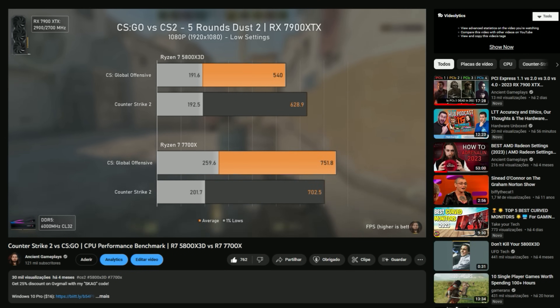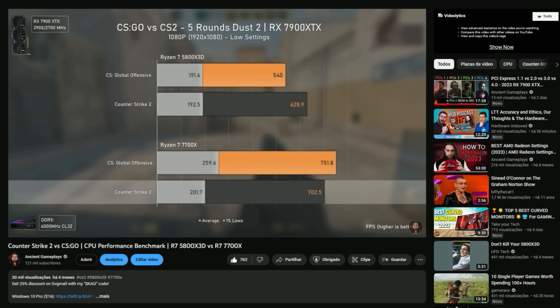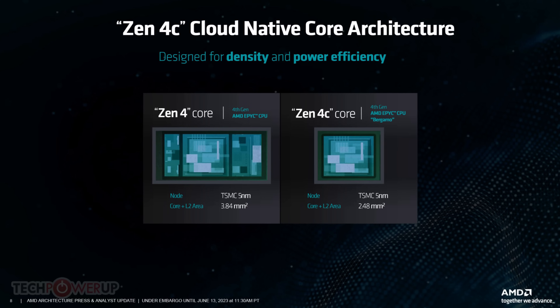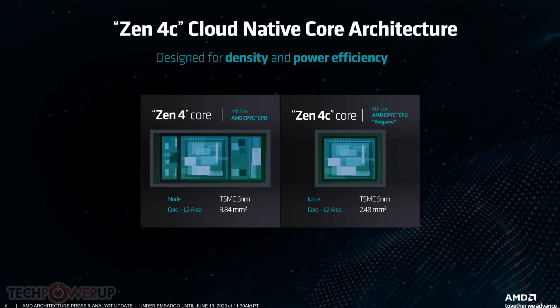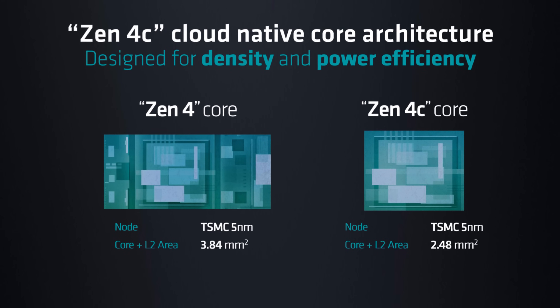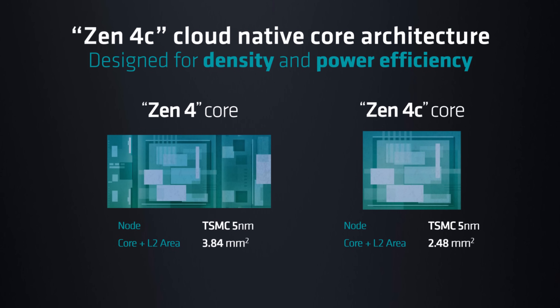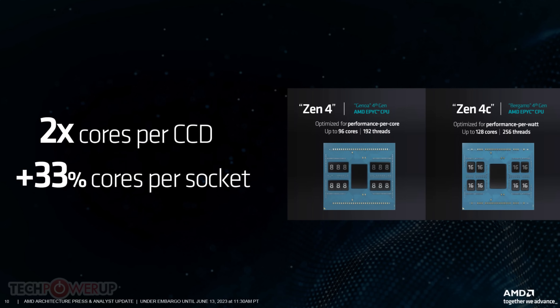Gaming highly benefits from cache, as seen with the X3D CPUs from AMD like the Ryzen 7 5800X3D and the Ryzen 7 7800X3D. But this wouldn't actually be an issue, because if these cores were used in mainstream gaming CPUs like the Ryzen series, they would be integrated with a similar layout to Intel's — the normal big cores for gaming and the smaller ones for multi-threading, or possibly aiding in gaming scenarios with a proper CPU scheduler.